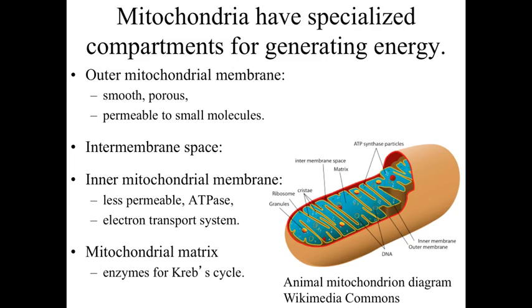Mitochondria have a double membrane: an outer mitochondrial membrane and an inner mitochondrial membrane, with an intermembrane space between them. The outer membrane is relatively smooth and porous, permeable to small molecules. The inner mitochondrial membrane is less permeable and is where the ATPases and the electron transport chain are located — membrane-bound proteins involved in moving electrons from a high-energy to a lower-energy state while generating ATP.